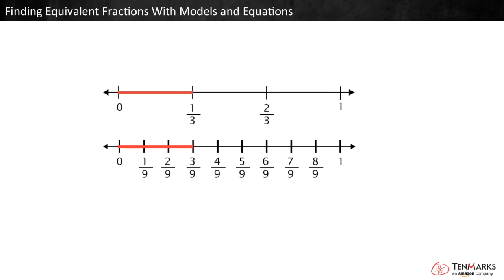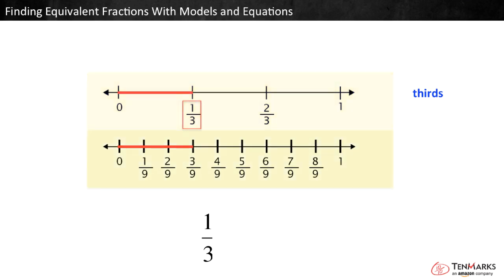Let's look at an example on a number line. These number lines show equivalent fractions. Write a multiplication equation that shows this. The first number line is partitioned into thirds — one third is shaded. The second number line is partitioned into ninths — three ninths are shaded.